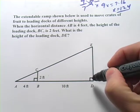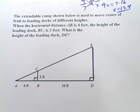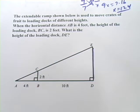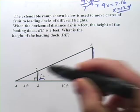What is the height of the loading dock DE? So we really want to find this side. We've got two similar triangles. The big one and then this little one inside it and this side corresponds to this side that has two feet.